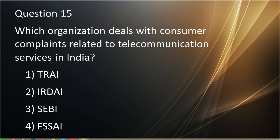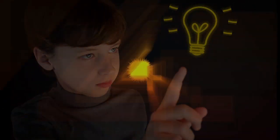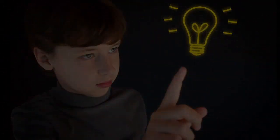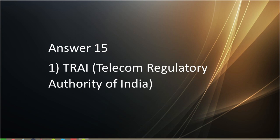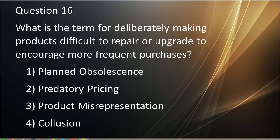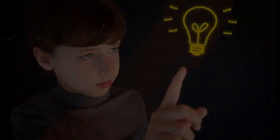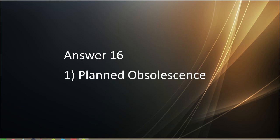Question number fifteen: Which organization deals with consumer complaints related to telecommunications services in India? Question number sixteen: What is the term for deliberately making a product difficult to repair or upgrade to encourage more frequent purchases? First is planned obliteration. Second is pre-retory pricing. Third is product misrepresentation. Fourth is collision. Answer to question number sixteen is planned obliteration.